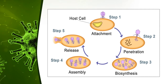Step 4 is assembly: the phage DNA and capsids are assembled into complete virions. The time between infection by a virus and the appearance of the mature virus within the cell is called the eclipse period. Step 5 is release: the host cell undergoes lysis and virions are released. The plasma membrane of the host cell gets dissolved by a viral enzyme called lysozyme, which is synthesized within the cell, breaking the bacterial cell wall and releasing the newly produced phage particles or virions.